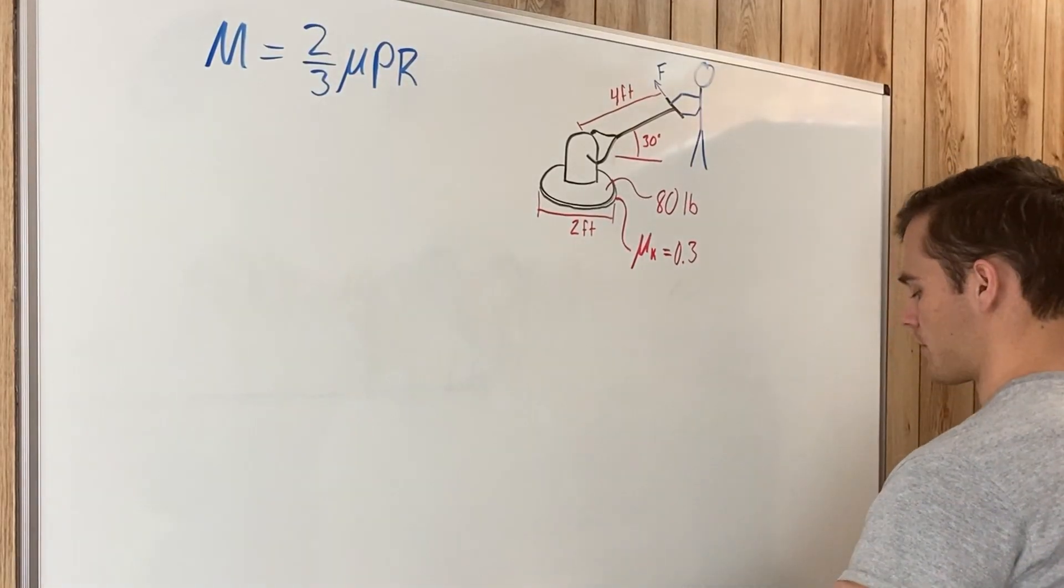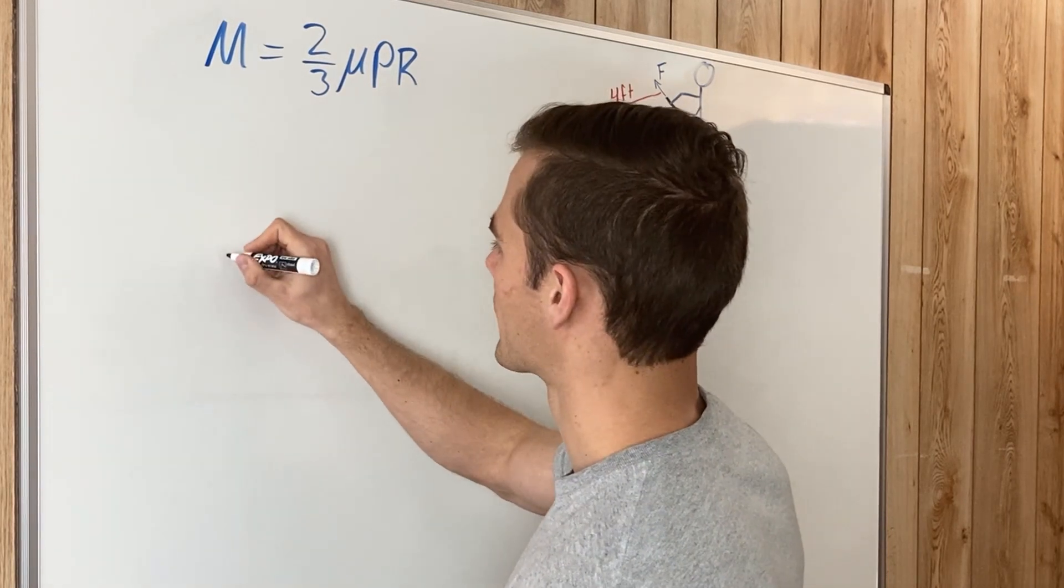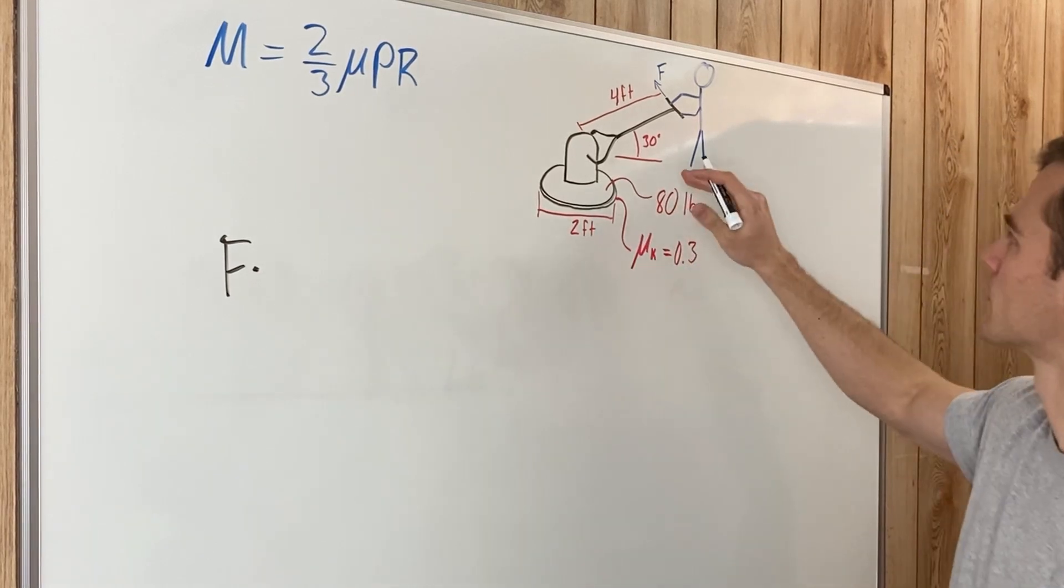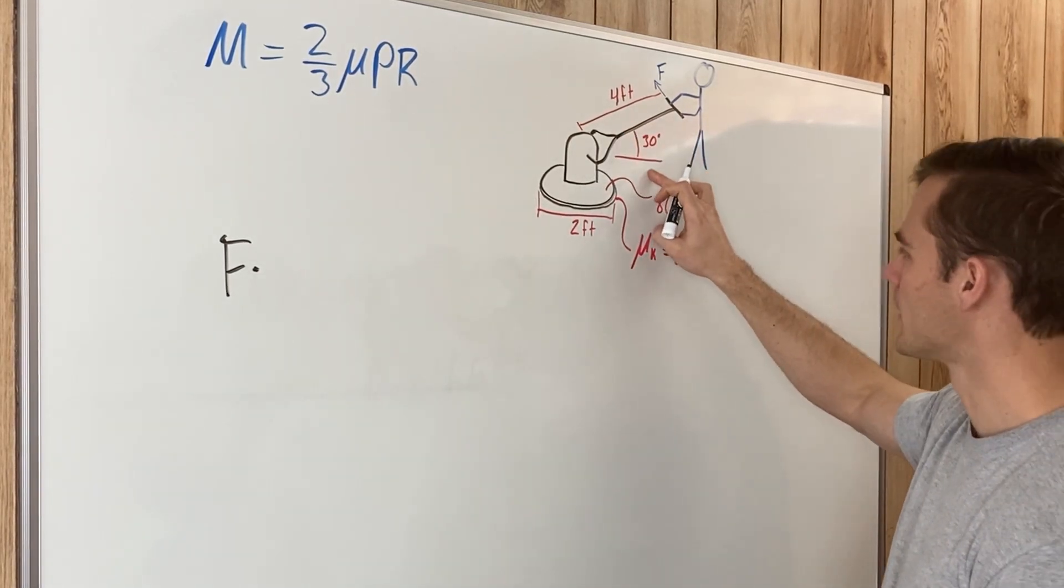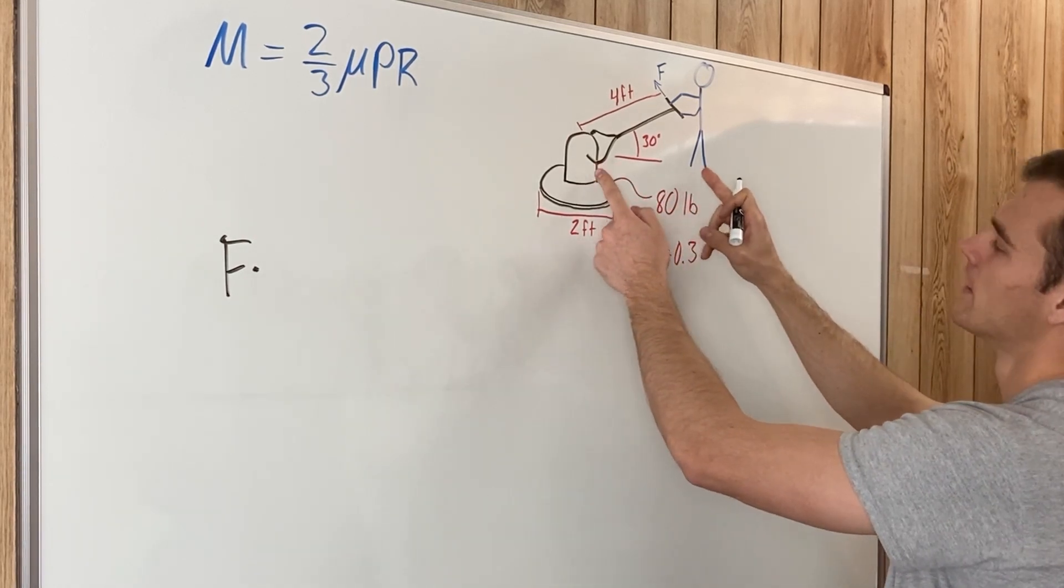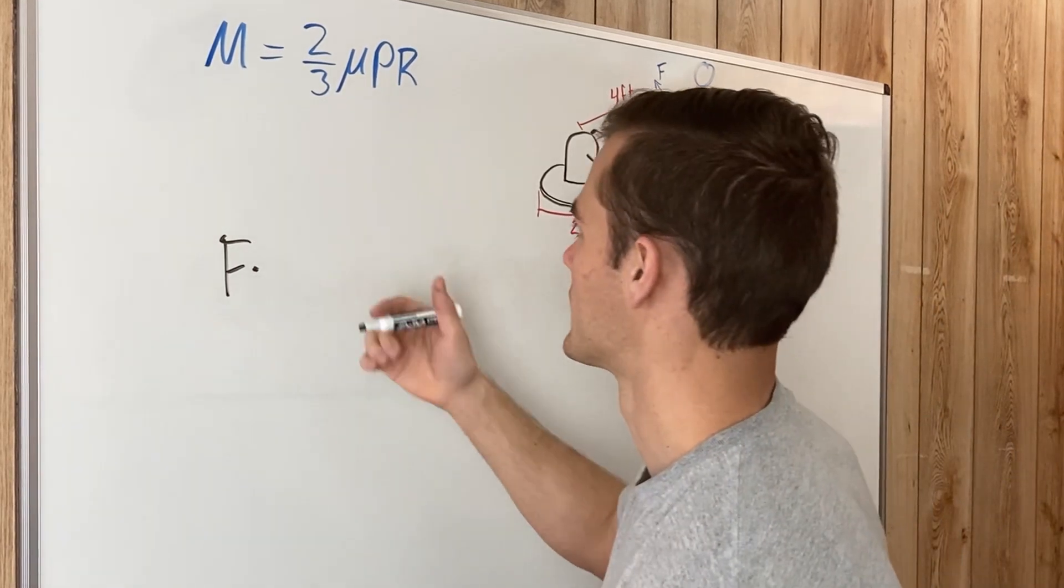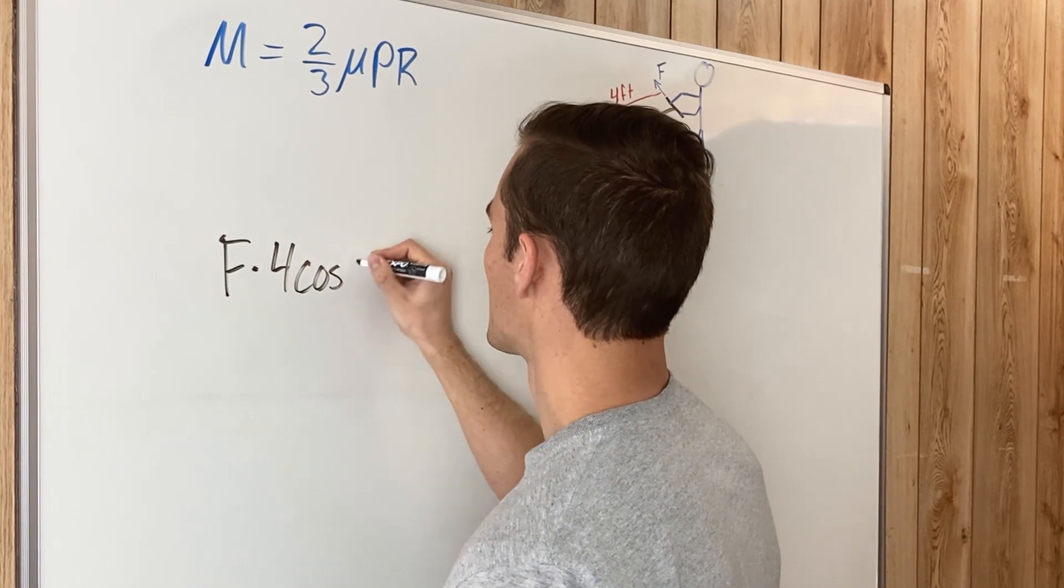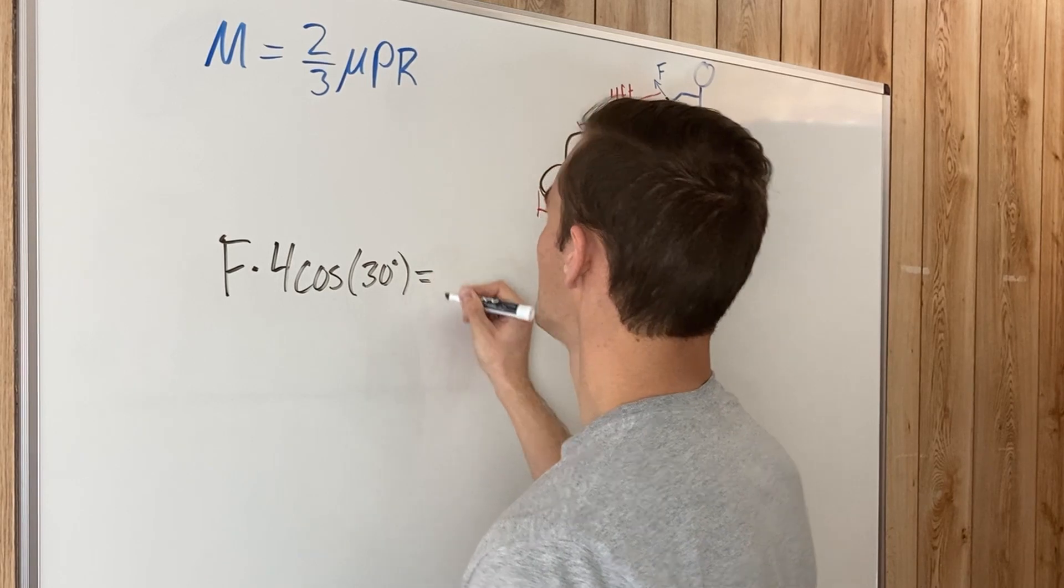So we are going to plug in variables and we're solving for F. We'll have the F multiplied by the perpendicular distance which is going to be four feet times the cosine of 30 degrees. That's the distance between here and here so that the force is acting perpendicular. That'll give us our moment. So that's 4 cos(30°) equals...